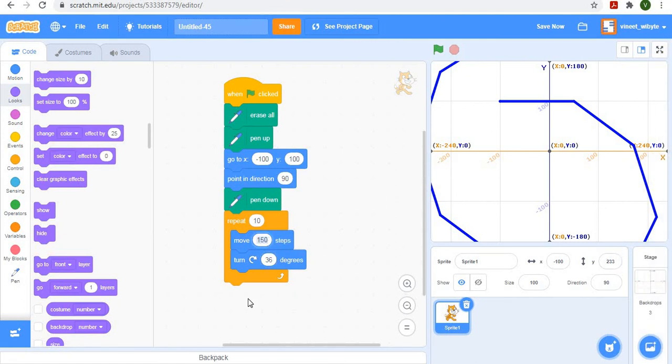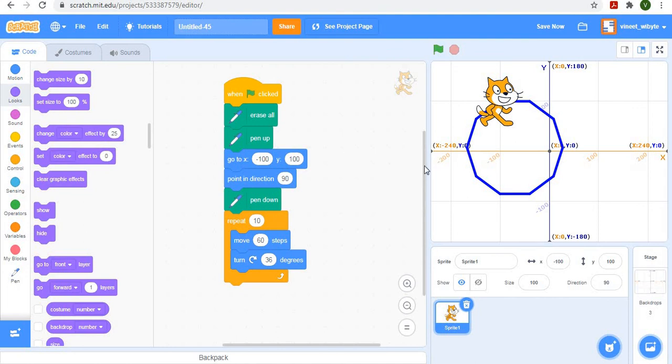So all I have to do is to reduce the length of this. So probably something like, let's say 60. We can just try it and then notice the sprite. In fact, I can draw it a little bit bigger as well. So maybe something like say 90 and sprite draws a nice 10 sided figure.